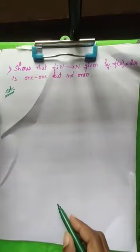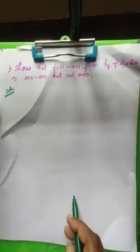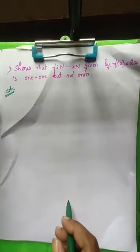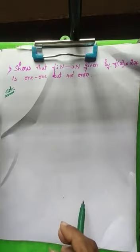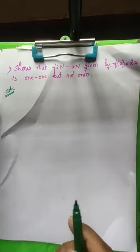We have to show that this function is one-one but it is not onto. Whenever we have to prove something, we have to prove it in a mathematical way — we can't take examples. But when we have to disprove something, we can take one particular example which does not satisfy the definition. So here we prove one-one generally, and disprove onto by a counterexample.